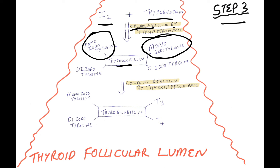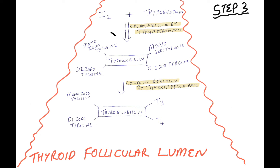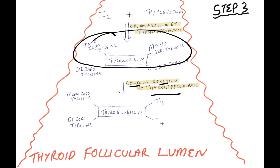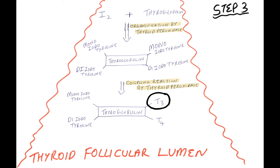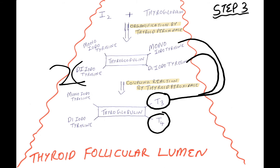Step 3: Iodine and thyroglobulin undergo organification by thyroid peroxidase, producing a compound consisting of thyroglobulin with two molecules of monoiodotyrosine (MIT) and two molecules of diiodotyrosine (DIT). This compound undergoes a coupling reaction by thyroid peroxidase to yield thyroglobulin with one MIT, one DIT, one T3, and one T4. T3 is formed from one MIT and one DIT; T4 is formed from two DIT molecules.